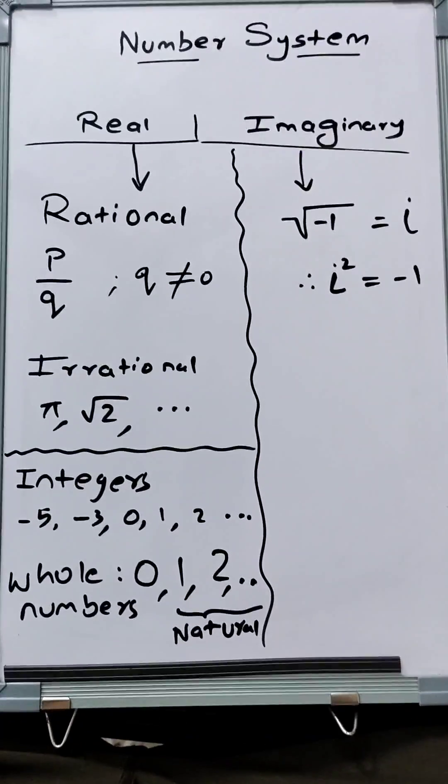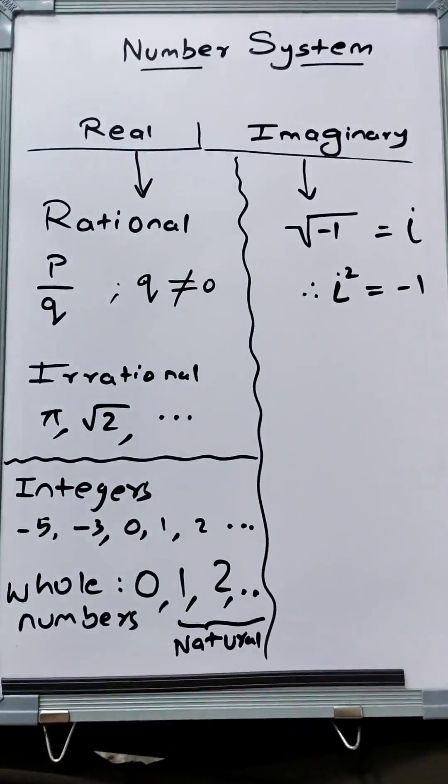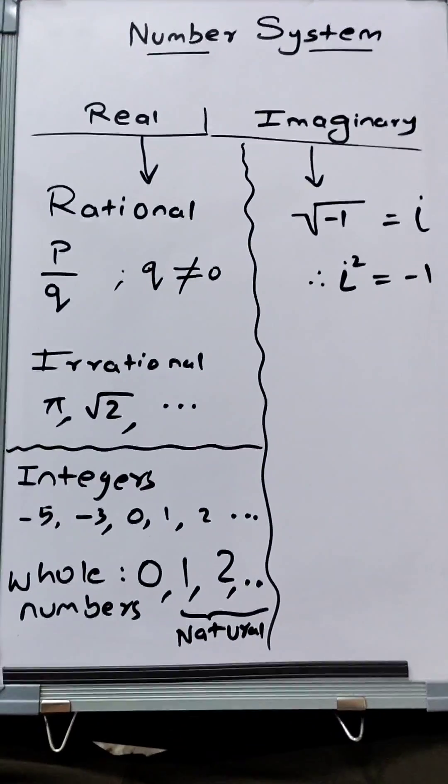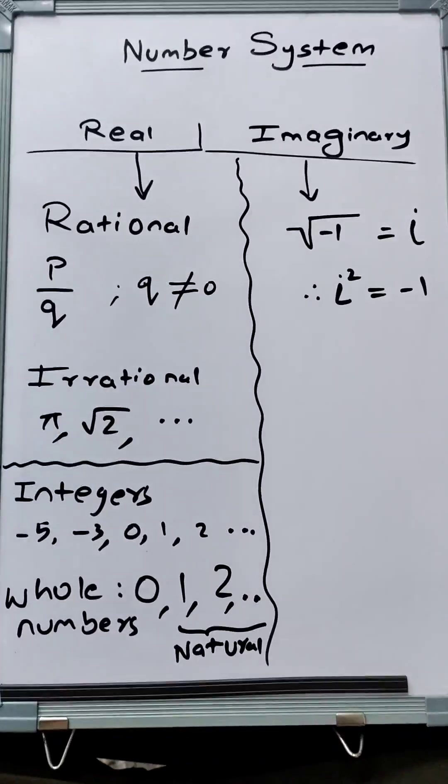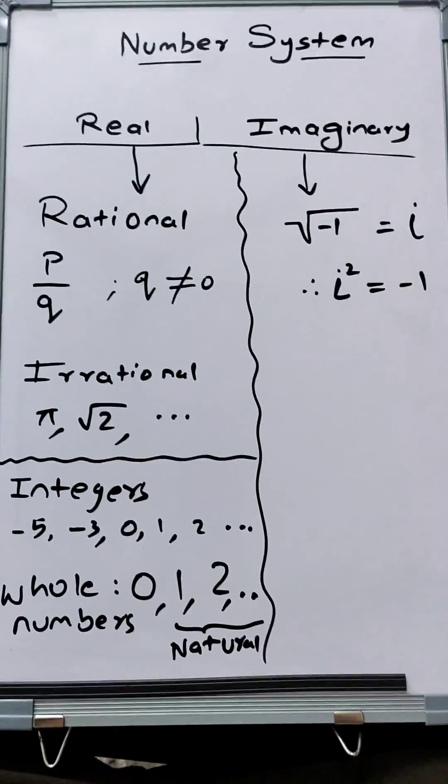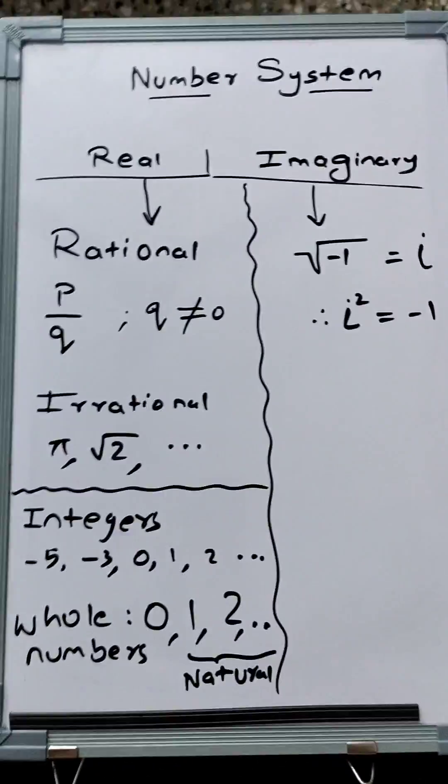Hello guys, so let us start with the first topic in quantitative aptitude: number systems. I'll be doing it clip by clip and merging it. Numbers are basically distinguished between two types.